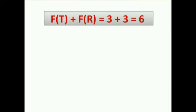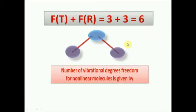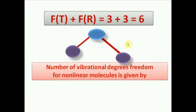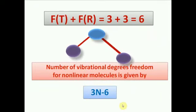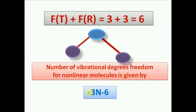So, the sum of degrees of freedom for translational and rotational motion gives three plus three, which equals six. Therefore, the number of vibrational degrees of freedom for a nonlinear molecule is given by the formula 3n minus 6.